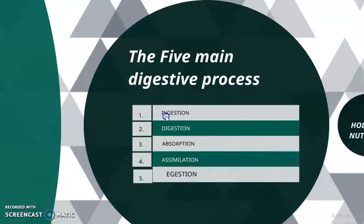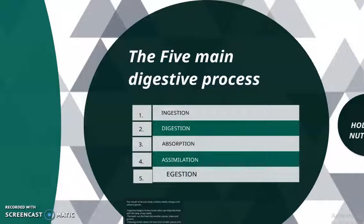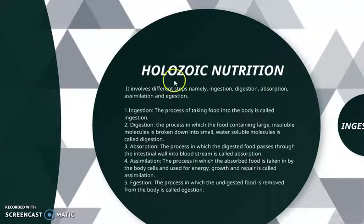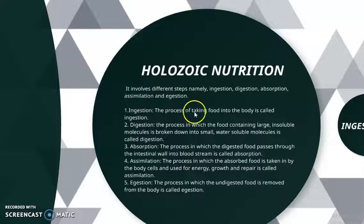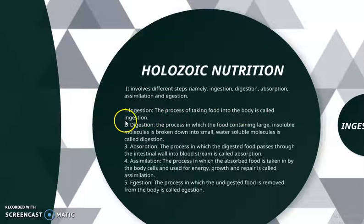Remember the order: ingestion comes first, then digestion, followed by absorption, assimilation, and ejection. Ingestion is the process where the body takes in food — the food is brought inside our body, hence it is called ingestion.